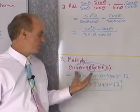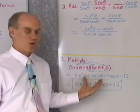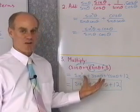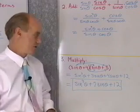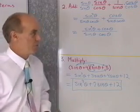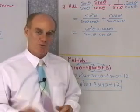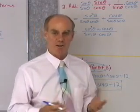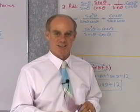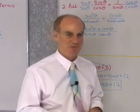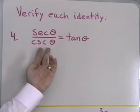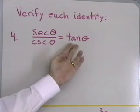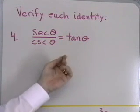Again, I just want to be able to do algebra with expressions that involve sines, cosines, and other trigonometric functions. The next problems involve what's called verifying identities. Let's look at the first one. For problem number 4, we want to verify this identity: secant θ over cosecant θ is equal to tangent θ.